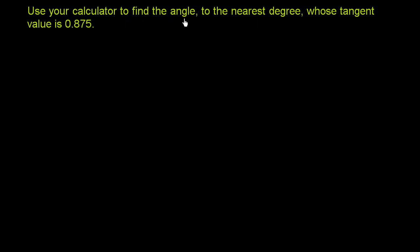Use your calculator to find the angle to the nearest degree whose tangent value is 0.875. So what do you think that's going to be? The angle to the nearest degree whose tangent value is 0.875.